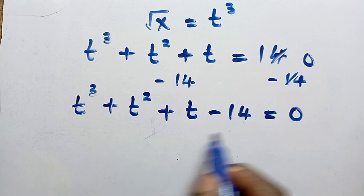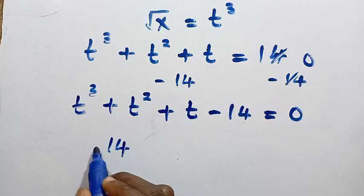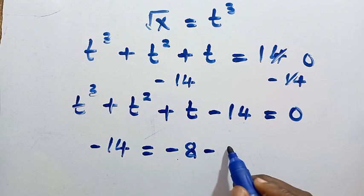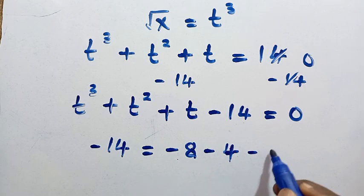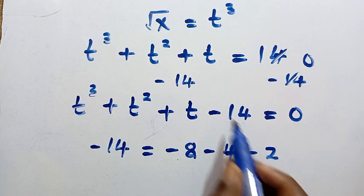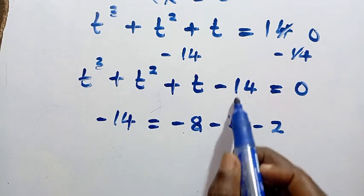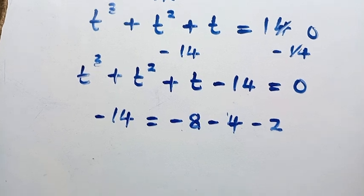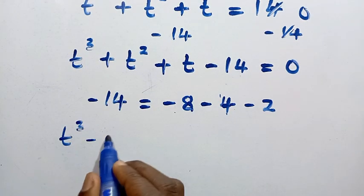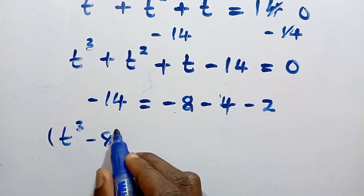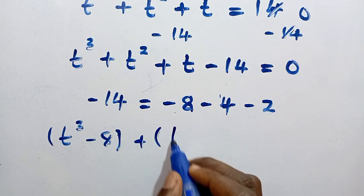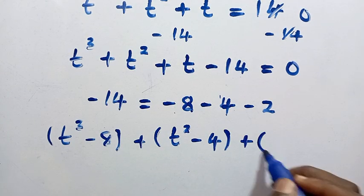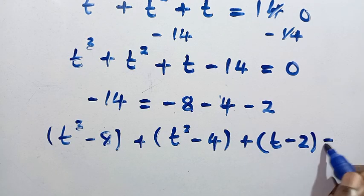Now we break down the minus 14: it is the same as minus 8 minus 4 minus 2. We replace and group: t cubed minus 8, plus t squared minus 4, plus t minus 2, all equals 0.